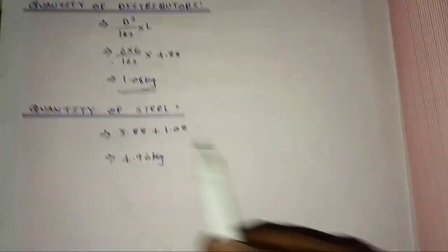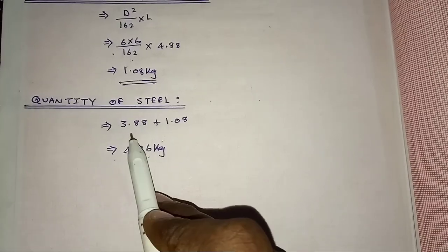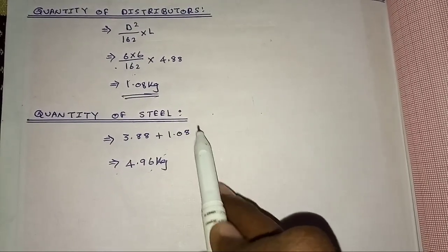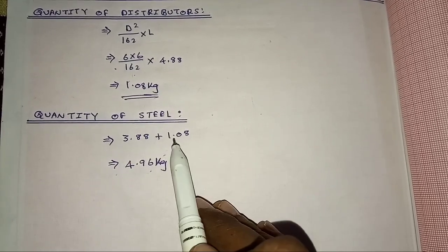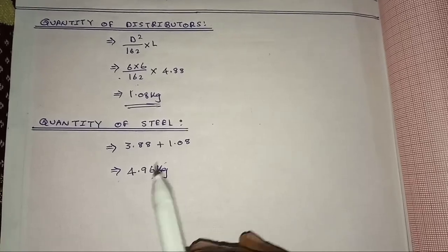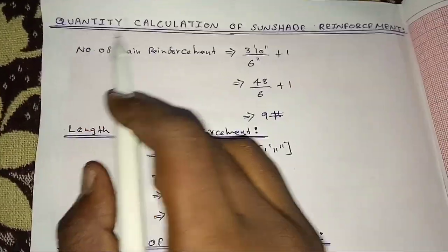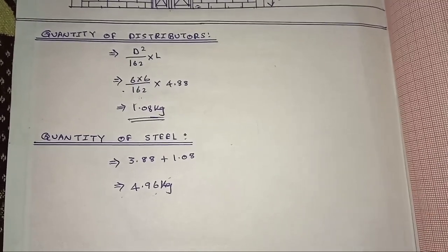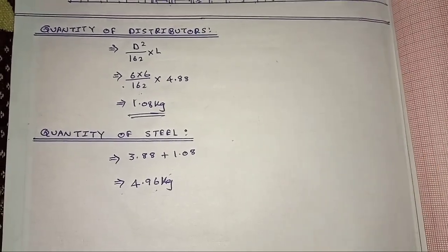Quantity of steel is equal to main reinforcement quantity plus distributors quantity. Steel is 4.96 kg. 4.96 kg steel is used. This is how much steel is used by the sunshade reinforcement.